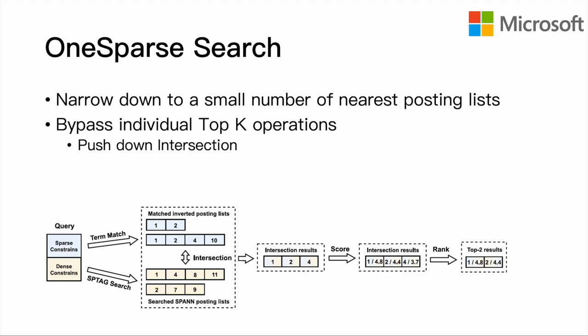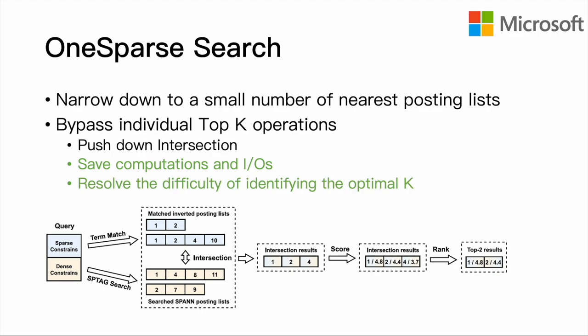This solves the difficulty of identifying whether a result can be filtered out during joint traversal, thus enabling intersection pushdown. This approach allows the system to early filter candidates, therefore saving a significant number of computations and IOs. Because we eliminate individual top-k operations, the difficulty of identifying the optimal k is also resolved.